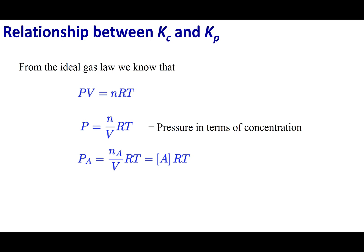Now let's talk about the relationship between Kc and Kp. Before we do this, we have to explore how concentration and the partial pressure of a gas are related to each other. Let's start at PV = nRT, the ideal gas law. I'm going to divide both sides by volume, giving me moles over volume — which is molarity, or in other words, concentration. So I can write the ideal gas law as: the partial pressure of something equals the concentration of that something times RT. So the partial pressure of A equals the concentration of A times RT. That's how these two things are related.